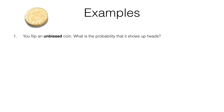Now that's what the word 'unbiased' is telling us. An unbiased coin is equally likely to come up heads or tails — those are the two possible outcomes and they are equally likely.